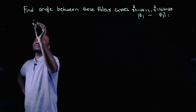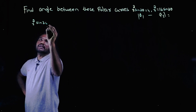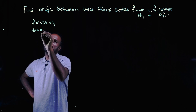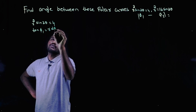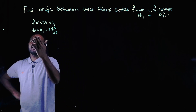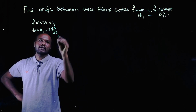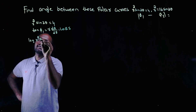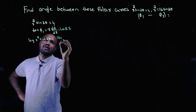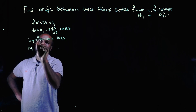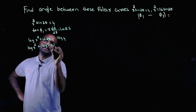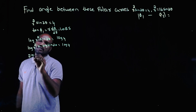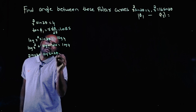First let's take the first curve: r² sin2θ = 4. To find φ1 we need tan φ1, which is r dθ/dr. Since r is not given directly, we have to take log on both sides. So log(r² sin2θ) = log 4. Using log(a·b) = log a + log b, and log(aᵐ) = m·log a, we get 2·log r + log(sin2θ) = log 4.